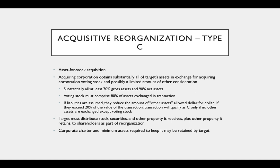Another type of acquisitive reorganization is a Type C reorganization. This is an asset-for-stock acquisition. The acquiring corporation obtains substantially all of the target's assets in exchange for the acquiring corporation's voting stock and possibly a limited amount of other consideration. The important things here are that substantially all of the assets must be acquired and they must be acquired for mostly voting stock.